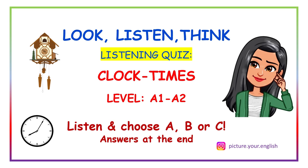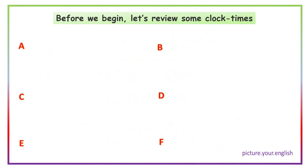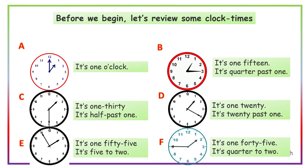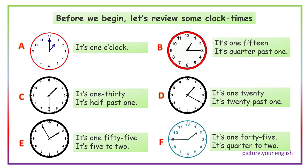So grab a pencil and a piece of paper and let's begin. A: it's one o'clock. B: it's 1:15, it's quarter past one. C: it's 1:30, it's half past one. D: it's 1:20, it's twenty past one.